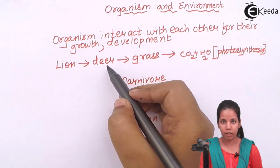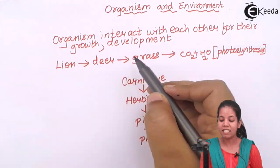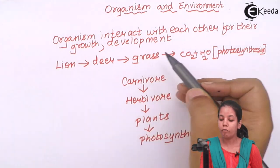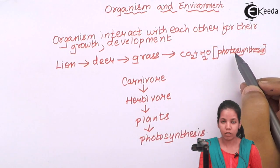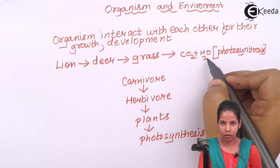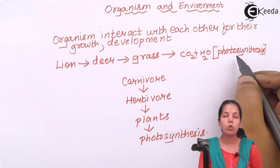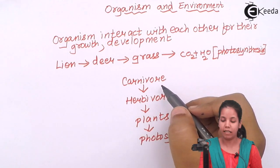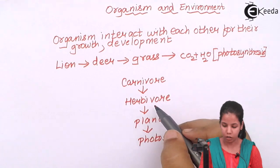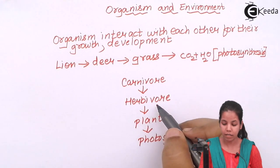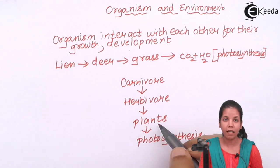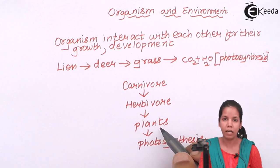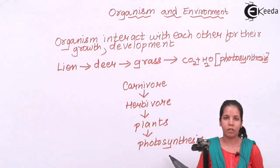Deer is dependent on grass for its nutritional needs, and grass while growing is dependent on photosynthesis. When I say photosynthesis, it starts with carbon dioxide plus water, and the process of photosynthesis takes place. In short, carnivorous animals — tiger, lion — are dependent on herbivorous animals, herbivorous are dependent on plants for nutrition, and finally plants can only grow with the help of photosynthesis.